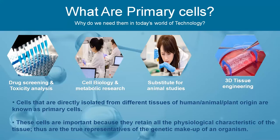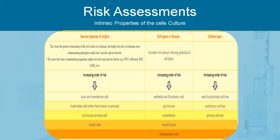With the increasing usage of primary cells, we also need to understand the biosafety concerns they may develop with respect to human health as well as risk to the environment. It is essential to assess the risk so we may implement containment measures and work practices in order to provide maximum protection to human health and the environment. There are multiple ways through which we can assess the risk.